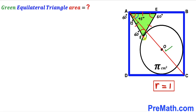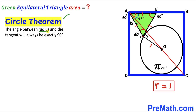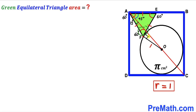Next, I'll connect the center O to the point of tangency F. We can observe that OF is the radius of the circle, so OF = 1 centimeter. Recalling the circle theorem: the angle between the radius and the tangent line is always exactly 90 degrees. Therefore angle EFO = 90 degrees. Adding the 60-degree angle and the 90-degree angle gives a total of 150 degrees for the combined angle.